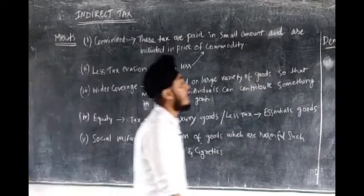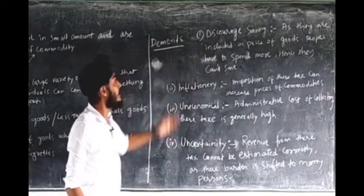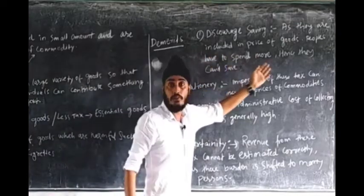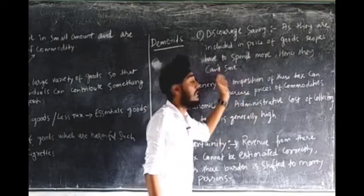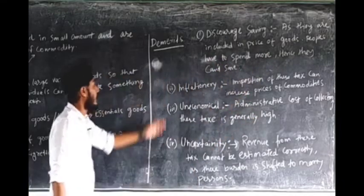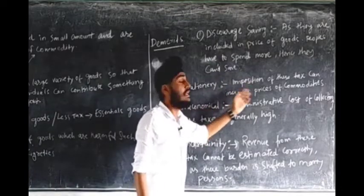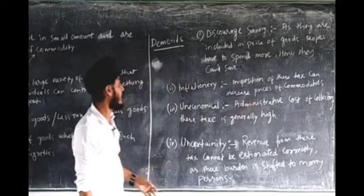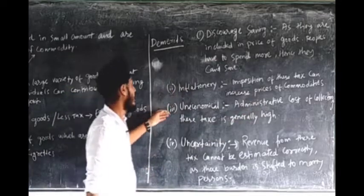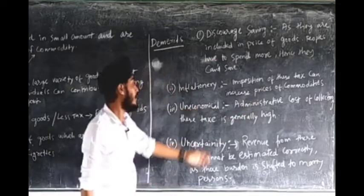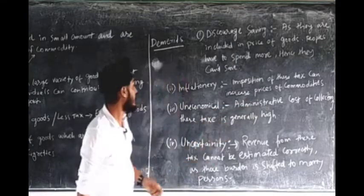Now let us see the demerits of indirect tax. The first one is discourages saving — indirect taxes are included in the price of goods, so people have to spend more on commodities and hence they cannot save. Number two is inflationary — imposition of this tax can increase the price of commodities, that is the reason they are called inflationary. Number three is uneconomical — the administrative cost of collecting these taxes is generally high.